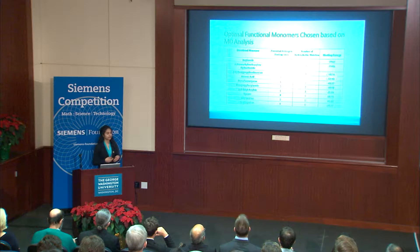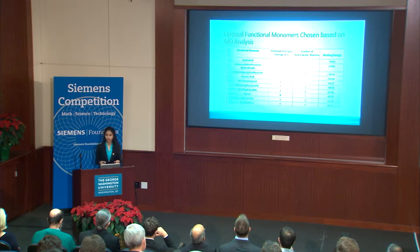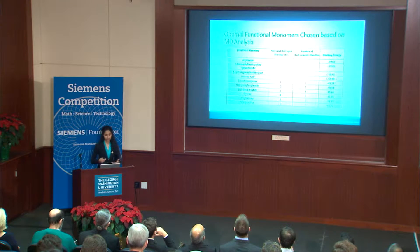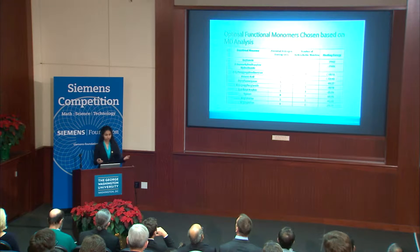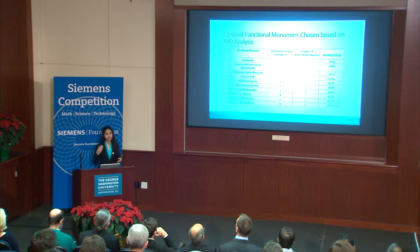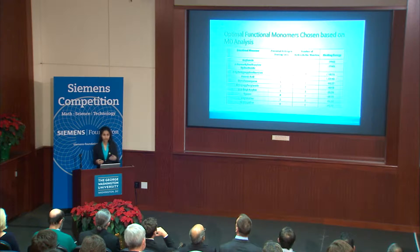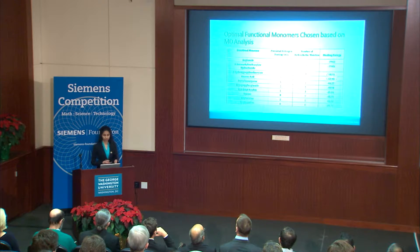In a nutshell, I found that hydroxypropyl methacrylate and itaconic acid were identified as the two prime candidates for MIP synthesis for endotoxins, because of the magnitude of their free binding energies, indicating they are more likely to react with LPS to form an effective imprint.